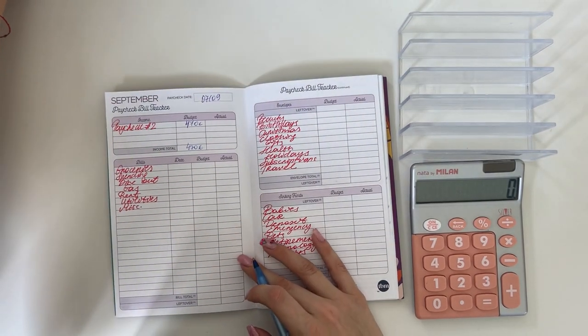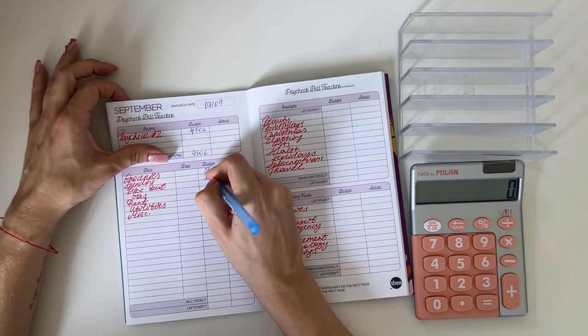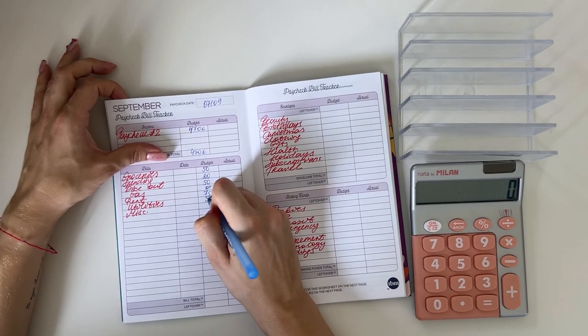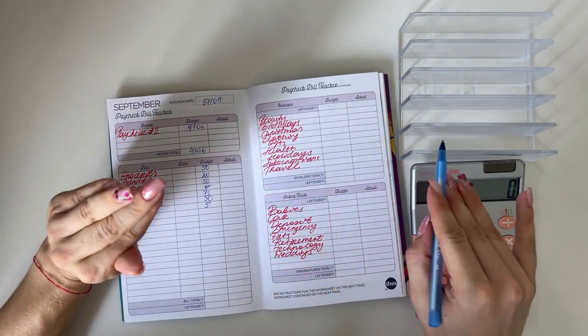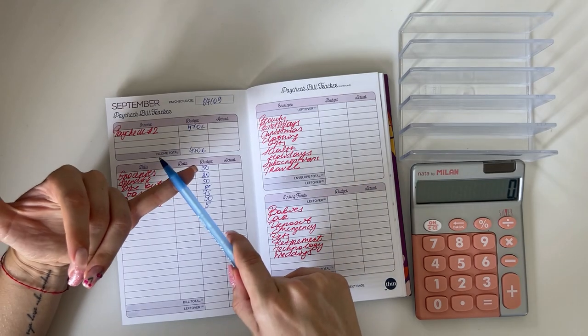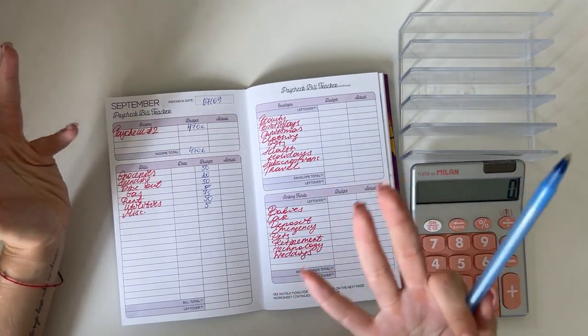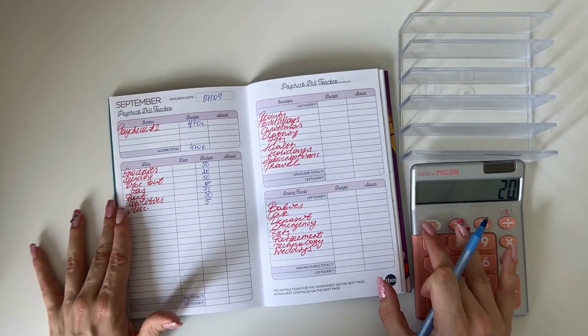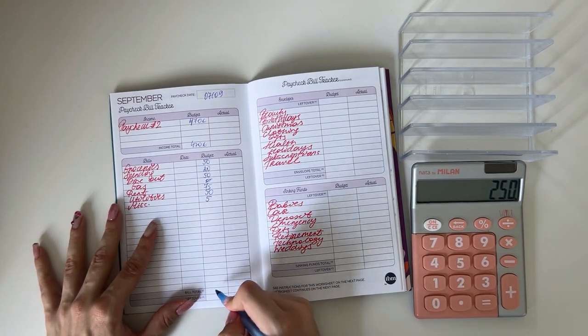Let me set up the amounts. Groceries will be getting 50, spending 20, dine out 50. Rent will be getting 75, nothing in gas, utilities will be getting 50, and miscellaneous 5. I'm putting a lot in utilities and rent because I want to stack up for the coming months. Utilities change a lot for the winter months. In summer I pay 30 to 50 euros but in winter it can be 100 to 150, so I really want to stack up now. That's 250 going into bills and cash envelopes.